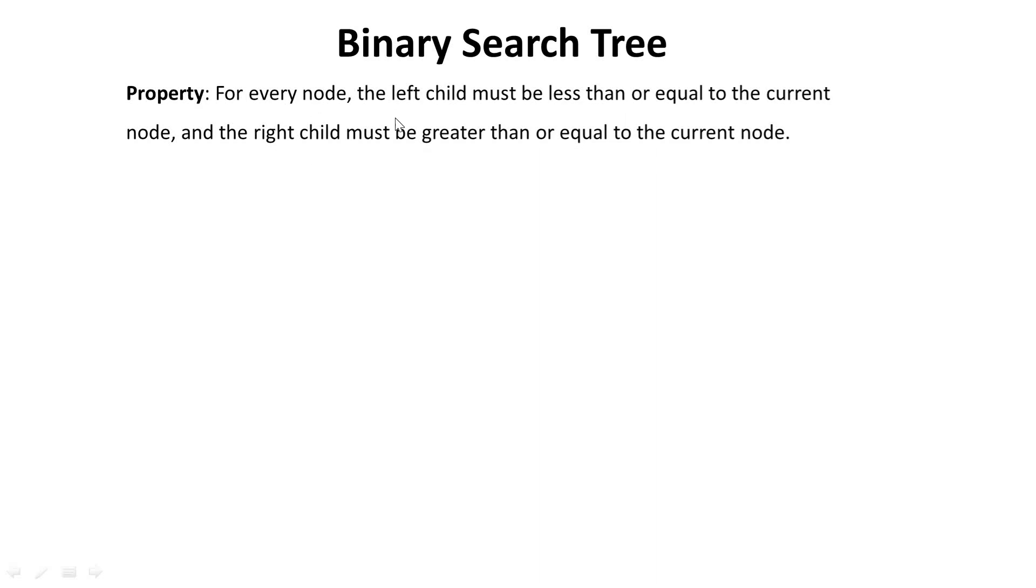Just a little review of the binary search tree will help us understand what is happening here. For binary search tree, every node on the left child must be less than or equal to the current node. Let's take some examples. For instance, we want to create a binary search tree with the following numbers. We have something like this. It's a good binary search tree. Not good, but it qualifies to be a binary search tree.